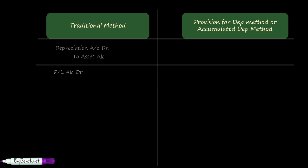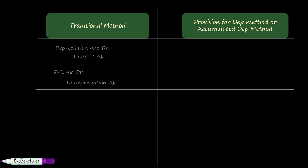Next, all nominal accounts must go to the P&L account at the end of the year. So we transfer the depreciation account to the profit and loss account: profit and loss account debit, to depreciation account.